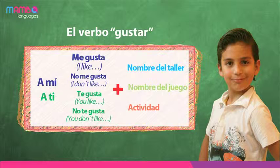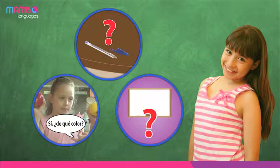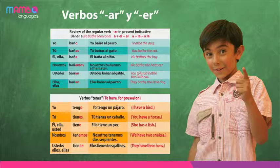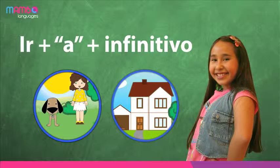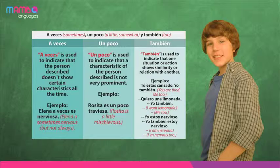Students will learn to use the verb gustar to talk about the above-mentioned subjects in singular. They will ask questions about quantities, colors, and shapes. They will reinforce the use of regular verbs ending in AR and be introduced to regular verbs ending in ER. They will talk about plans to do activities with the formula IR plus A plus infinitive, and will expand their knowledge of adverbs.